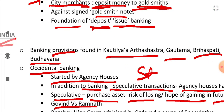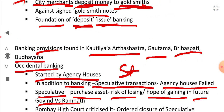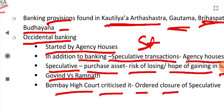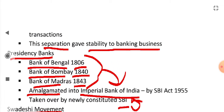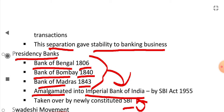History of banking in India: we can find banking provisions, laws, and rules in Kautilya's Arthashastra, and in Gautama's, Brihaspati's, and Baudhayana's works. Occidental banking or western banking was started in India by agency houses. In addition to banking, they were doing speculative transactions, due to which the agency houses failed. Speculative transactions are like purchasing assets with a risk of losing or hope of gaining in the future — like stock and share markets. In Govind v. Ramnath case, the Bombay High Court criticized and ordered closure of speculative transactions, which gave stability to banking business.